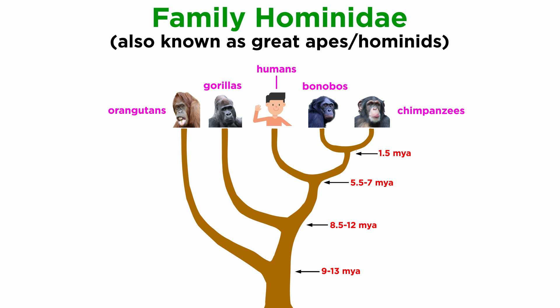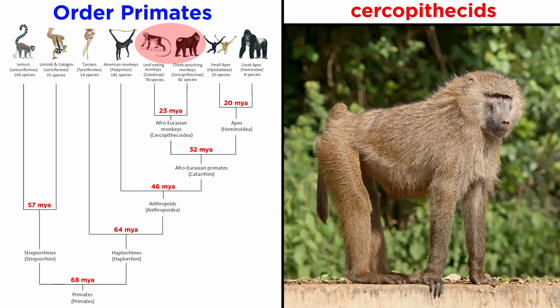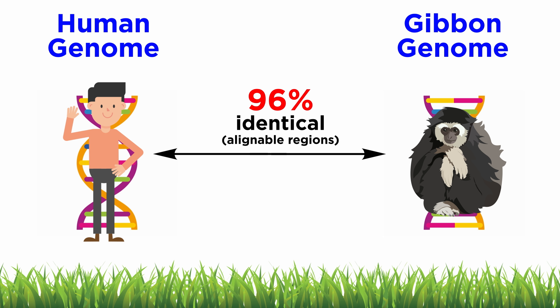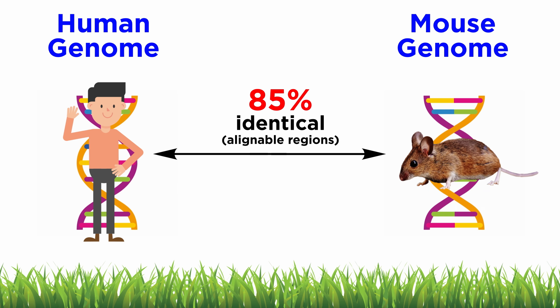Together, we make up the great apes, or hominids. Based on morphologic similarities, we would expect the next closest relative to humans to be the gibbons, or hylobatids, followed by the old world monkeys, or cercopithecids. Sure enough, gibbons come in at 96% and rhesus macaques at 93%. Mice, for reference, are 85% similar.